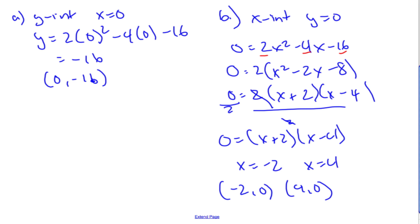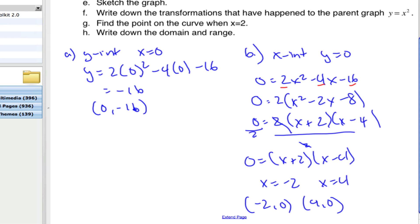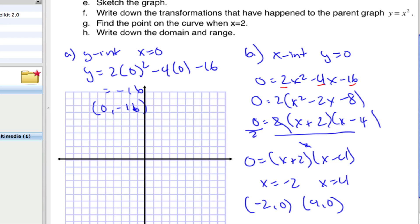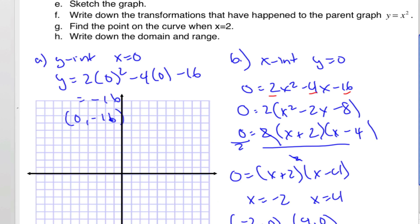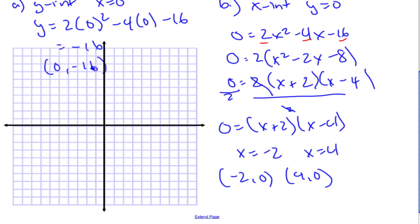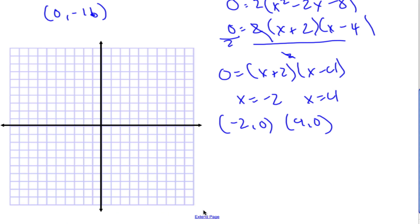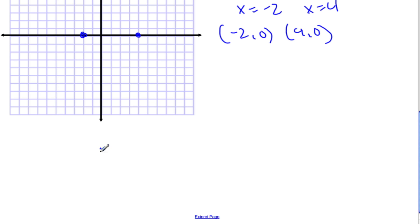Now let's start building a graph. I can plot the y-intercept at negative 16 and the x-intercepts at negative 2 and 4. So here's negative 2, here's 4 on the x-axis, and the y-intercept is estimated down at about negative 16.